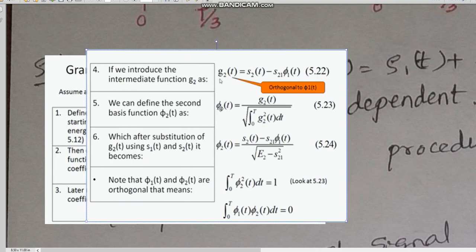Now we can define Phi2 of t by this equation: G2 of t divided by square root of 0 to t G2 whole square t dt. Now we have got the second orthonormal basis function. G2 values we substitute, and if we simplify this equation, we will get this equation by using these two concepts.